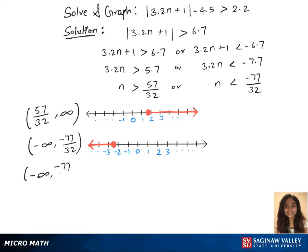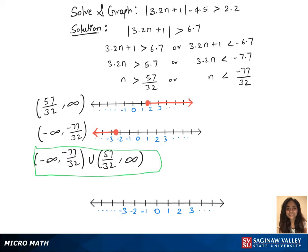We'll do the final graph now. Look for the set 57 over 32 comma infinity and mark it, and the other one minus infinity and minus 77 over 32.